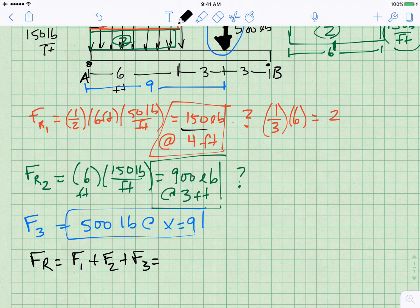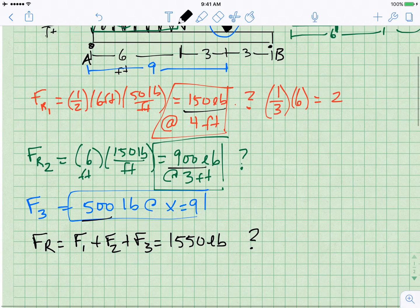So we got 150 plus 900 plus 500, which is 1550 pounds. Where do I put it? Well, to do that, I have to calculate the moment. So I have to calculate the moment at A.